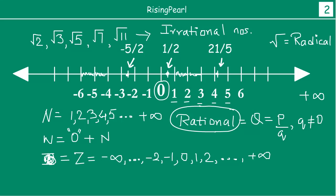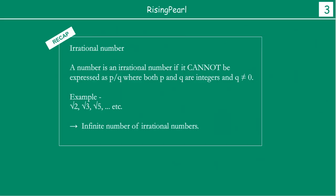So this is the number which we can't write in p by q form, and these numbers also live on a number line. So let's recap: irrational numbers are such numbers that cannot be expressed as p by q, where both p and q are integers and q is not equal to 0.